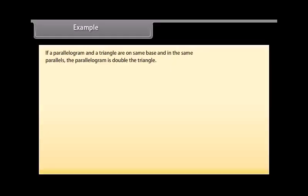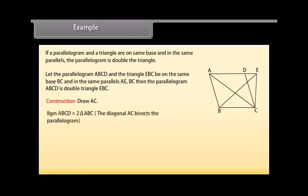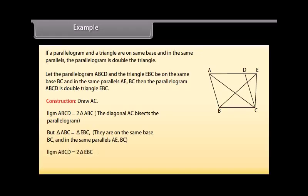Example: If a parallelogram and a triangle are on the same base and between the same parallels, the parallelogram is double the triangle. Let the parallelogram A-B-C-D and triangle E-B-C be on the same base B-C and between the same parallels A-E and B-C. Then, the parallelogram A-B-C-D is double the triangle E-B-C. Construction: Draw A-C. Since A-C bisects the parallelogram, the parallelogram A-B-C-D is double triangle A-B-C. But triangle A-B-C equals triangle E-B-C, because they are on the same base B-C and between the same parallels A-E and B-C. Therefore, parallelogram A-B-C-D is also double triangle E-B-C. Hence proved.